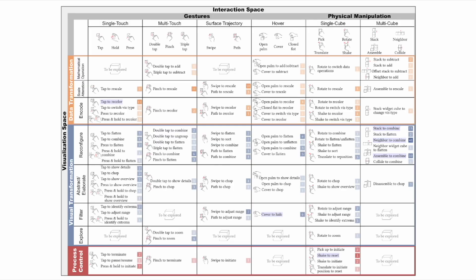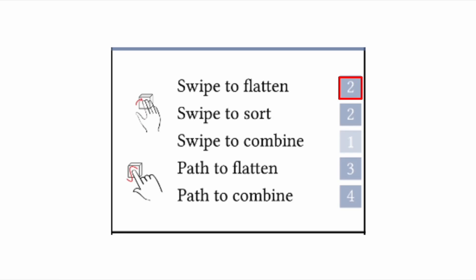Here is a closer look of the design space, which relates the interaction space to the visualization space. The interaction space defines the ways users engage with tangible cubes. Broadly, this can be categorized into gestures and physical manipulations. The visualization space defines how visual information is presented, and it is divided into three categories based on target of commands, namely data transformation, visual transformation, and process control.